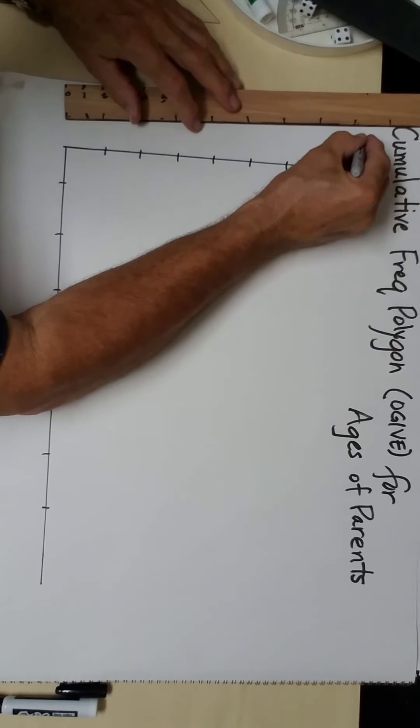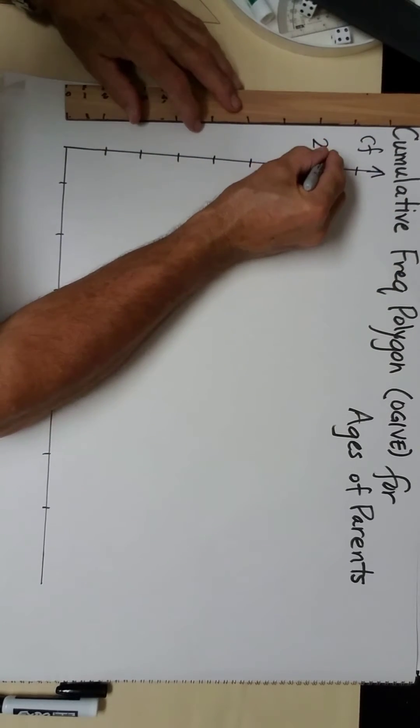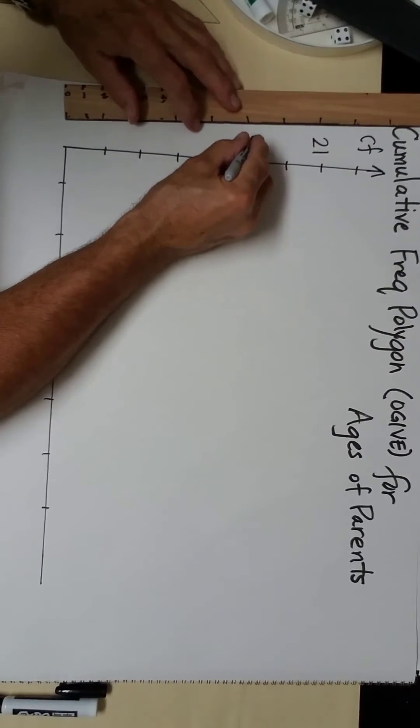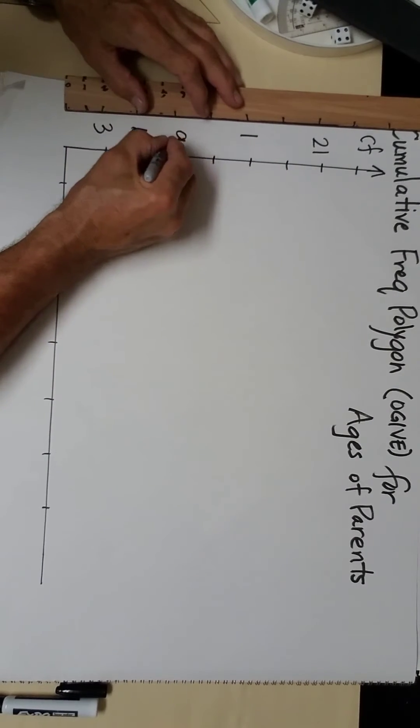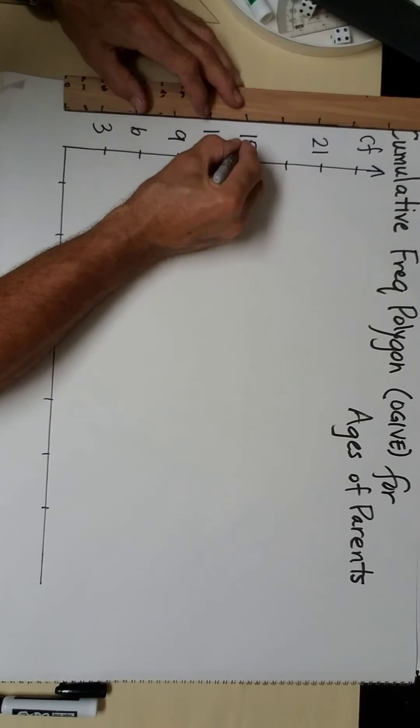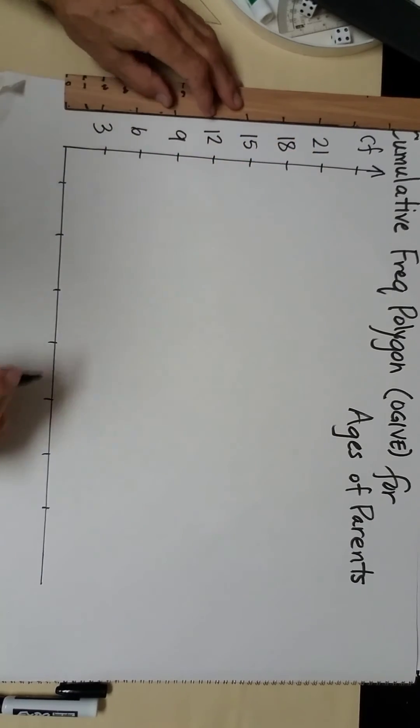This is cumulative frequency. Let's see, better do this right: 3, 6, 9, 12, 15, 18, okay.